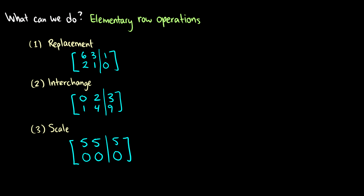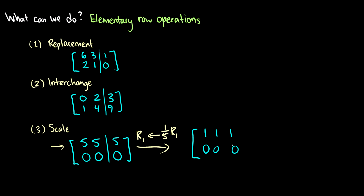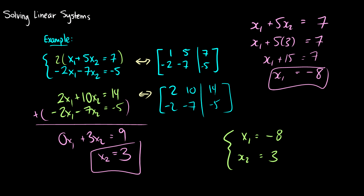I'm going to talk about scaling first. Scaling means we can multiply a row by any number. For instance, we can take r1 and turn it into one-fifth of the first row — that's the same as dividing by 5 — and get the row 1, 1, 0, 0. We saw this in the first example where multiplying row 1 by 2 gives 1×2=2, 5×2=10, 7×2=14, corresponding to the matrix below it. We can multiply one row at a time.